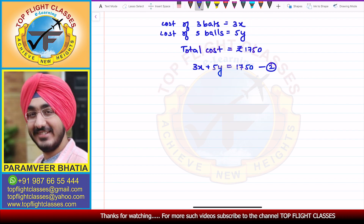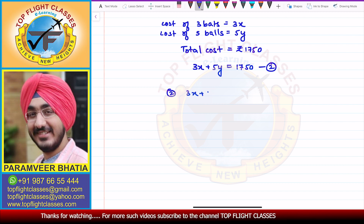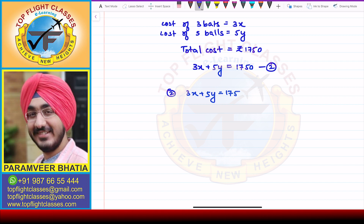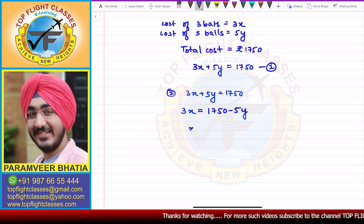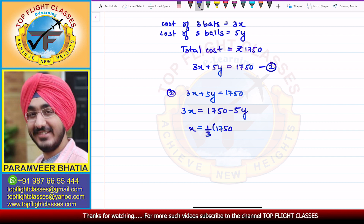Now I choose the second equation, that is 3x + 5y = 1750, and I isolate x. So 3x = 1750 − 5y, which gives x = (1/3)(1750 − 5y). This is equation number 3, which I'll use for substitution.